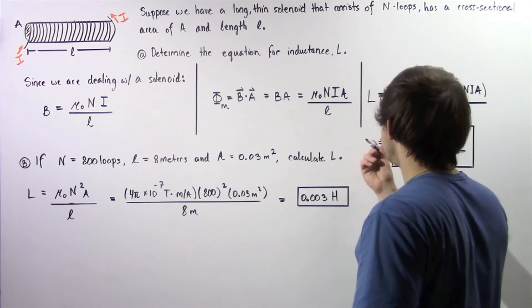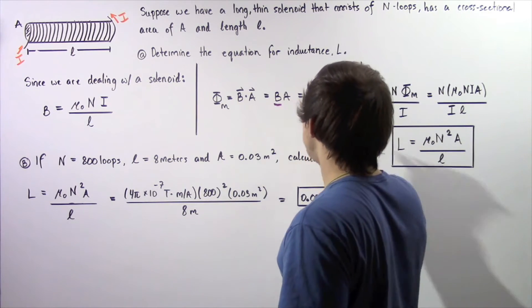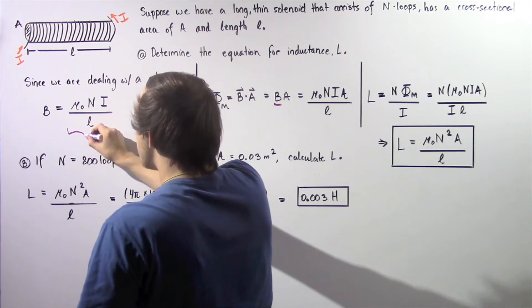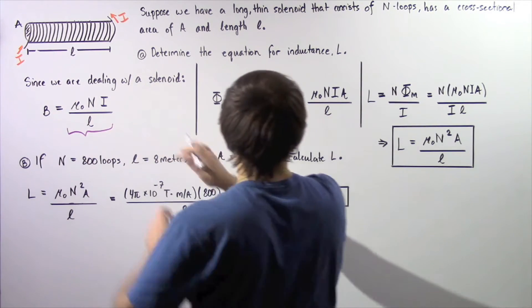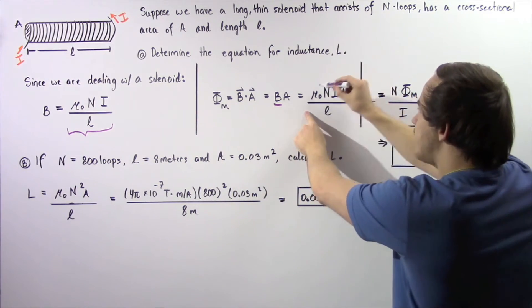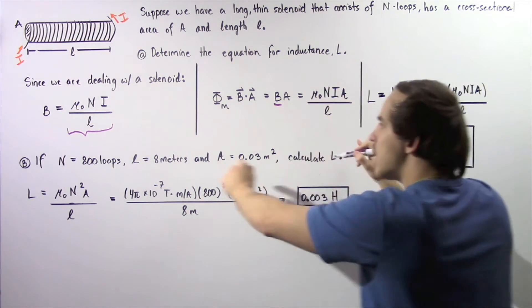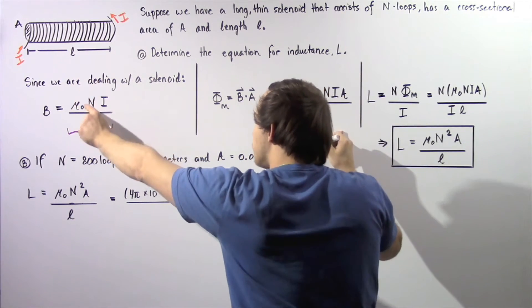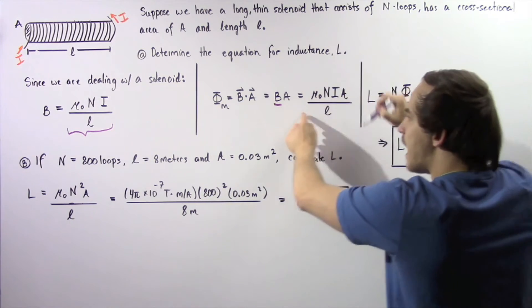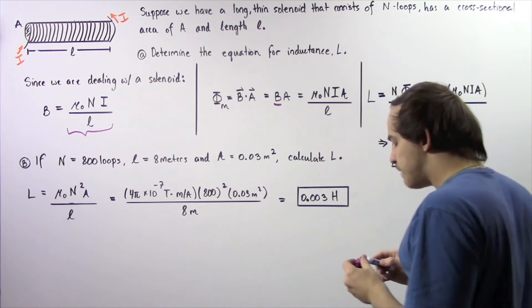Now we can take the magnetic field B and replace this B with the following equation that we showed. Let's take this and plug it in for B and we get the following result: μ₀ multiplied by N multiplied by I multiplied by A divided by L. Now finally, let's recall how we define inductance or self-inductance.